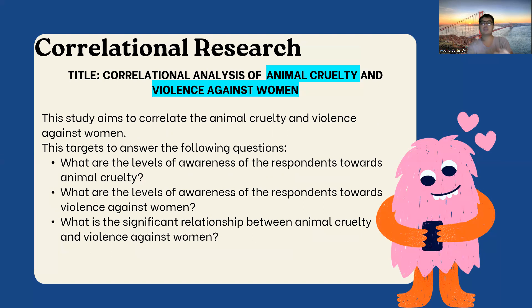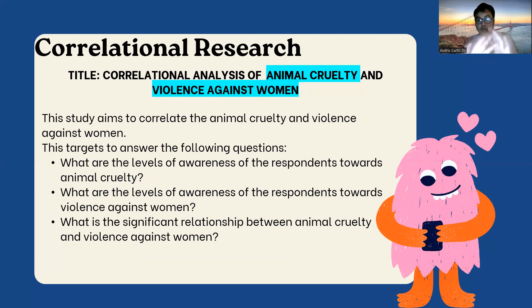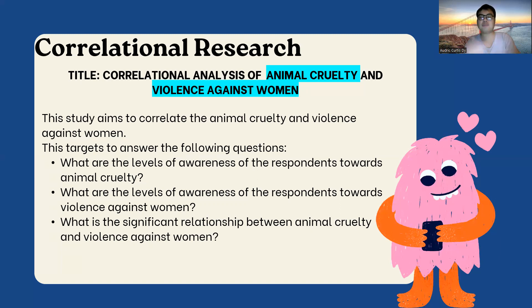When we say correlational research, the keywords are animal cruelty and violence against women. The title is 'Correlational Analysis of Animal Cruelty and Violence Against Women.' The study aims to correlate animal cruelty and violence against women — we determine the correlation. When correlating two variables, we need to make sure both have similarities. Animal cruelty and violence against women have similarities: cruelty is a form of maltreatment — it could be violence or bullying — while violence against women could be physical assault or cruelty. Both are offensive acts, so there are many similarities.